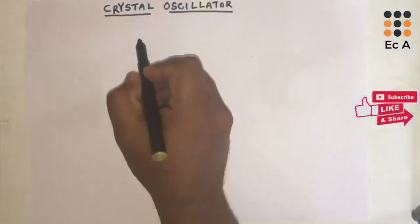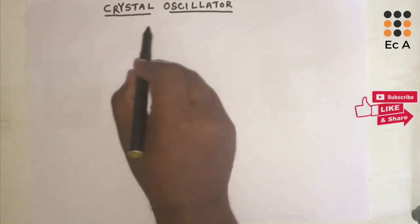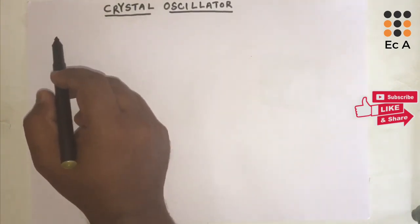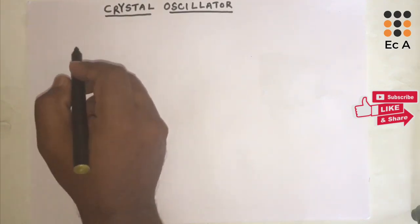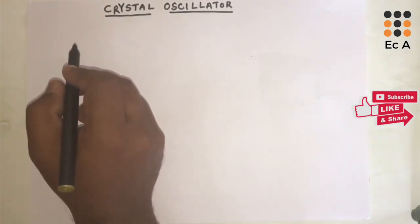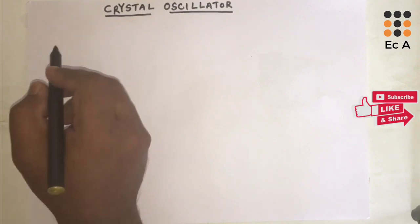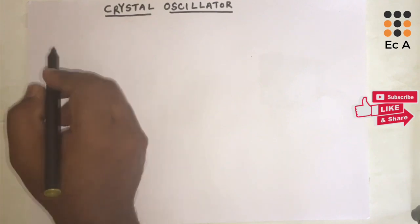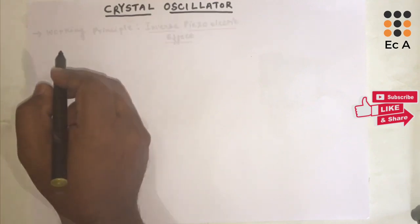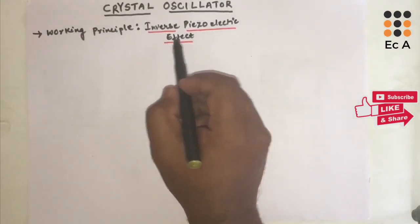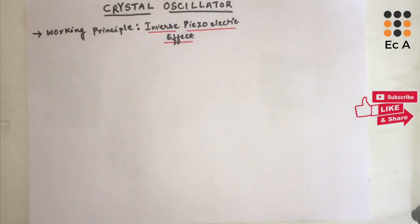Hello friends, welcome to EC Academy. In this lecture, let us understand crystal oscillator. A crystal oscillator is basically a tuned oscillator — it is the same as a tuned oscillator except it uses a piezoelectric crystal instead of an inductor. It works on the principle of inverse piezoelectric effect.